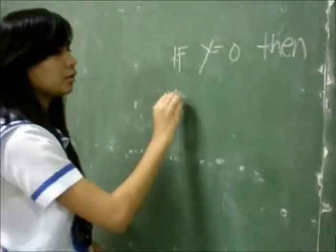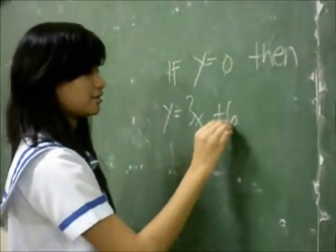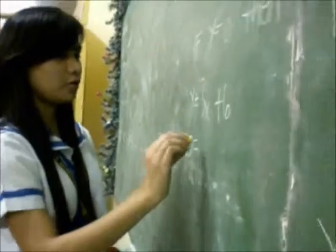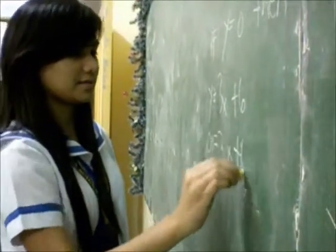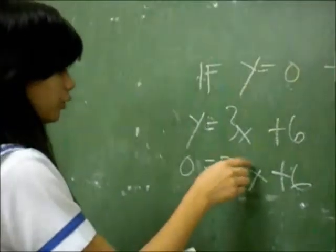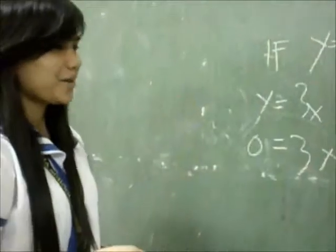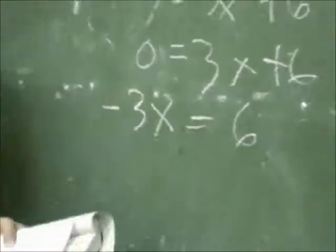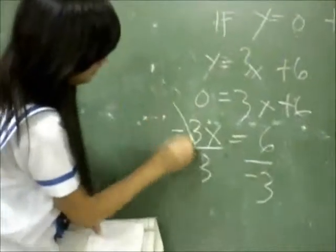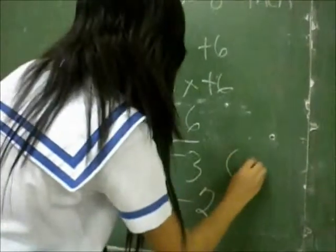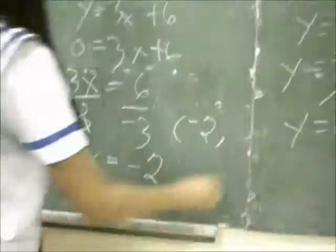Now substitute y equals 0 into the equation y equals 3x plus 6. We get 0 equals 3x plus 6. Combining like terms, we have negative 3x equals 6. Dividing to cancel, we get x equals negative 2. So we have the point (negative 2, 0).